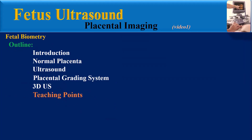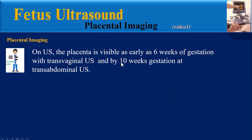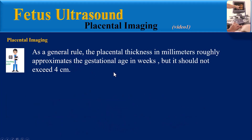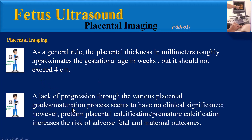Final teaching points: On ultrasound, the placenta is visible as early as 6 weeks with transvaginal ultrasound and by 10 weeks at transabdominal ultrasound. Sonographically, the placenta in the first and early second trimesters appears homogenous in echo texture and mildly hyperechoic compared with the underlying myometrium, then becomes more isoechoic with advancing gestation. Placental thickness in millimeters roughly approximates gestational age in weeks, but should not exceed 4 cm. A lack of progression through placental grades has no clinical significance; however, preterm placental calcification increases the risk of adverse fetal and maternal outcomes.